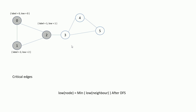Now notice here that all neighbors of one have already been visited. What we do is we choose the lowest possible low value connected to this node. The low of one will be updated to zero because the low of zero is zero. Once one is done doing depth-first search, it will return to its parent two. Two will also update the same value. From two, we will keep continuing the depth-first search and it will go to three.